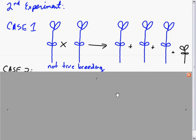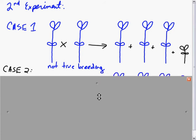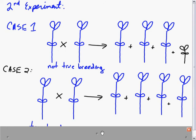In the first case, he took two tall pea plants, bred them together, and got a little different result than before. Instead of all being tall, he would get proportionally three tall for one short.